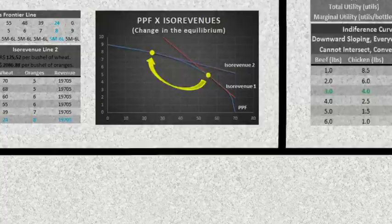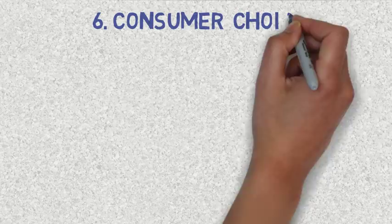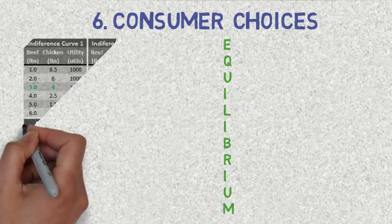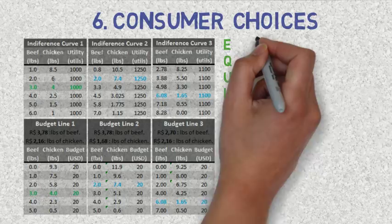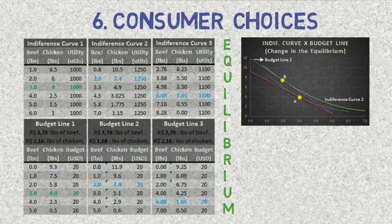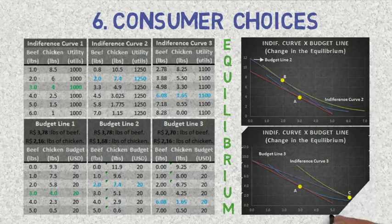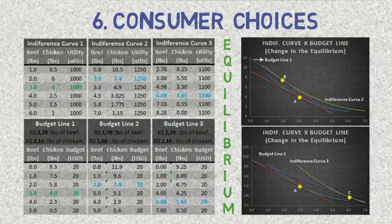It is interesting to investigate how changes in prices shift the point of equilibrium. Suppose that the price paid for each pound of chicken decreases to $1.68. This changes the budget line slope, and the second budget line is tangent to another indifference curve. Point B of tangency corresponds to the new equilibrium, where consumption of beef decreases to 2 pounds instead of 3, and chicken increases to 7.4 pounds instead of 4. If instead the price per pound of beef decreases to $2.70, a third budget line is tangent to indifference curve 3. Point C of tangency represents the new equilibrium, where consumption of beef increases to 6.08 pounds and chicken decreases to 6.8 pounds.